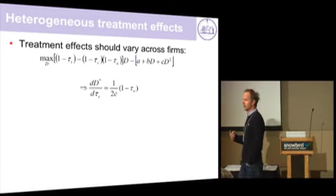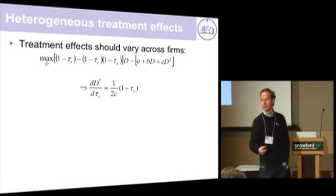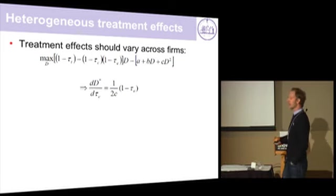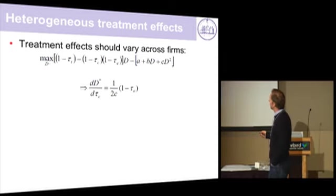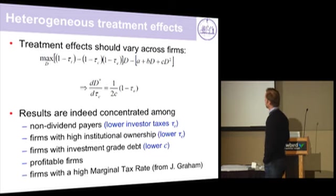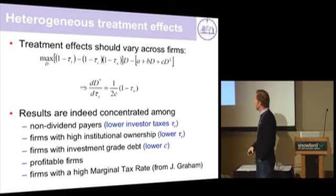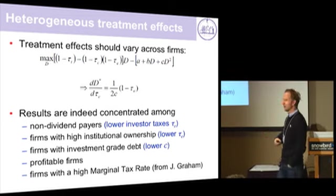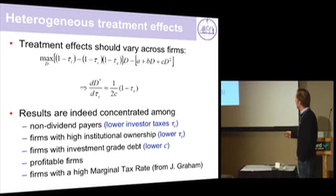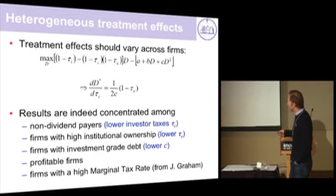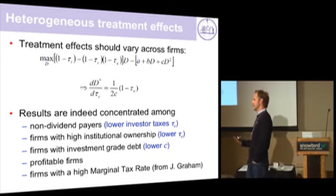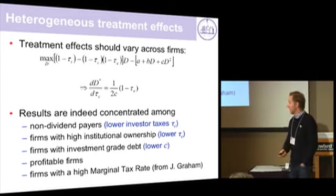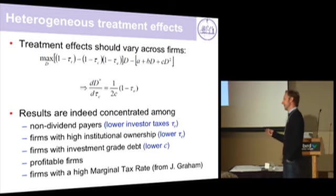We look at heterogeneous treatments because the theory is informative about comparative statics we can test. The optimal amount of debt would be affected by how income from equity is taxed and the curvature of the cost function. Indeed, firms with high institutional ownership or non-dividend payers — who have little taxation of income from equity, since this comes from capital gains you can time — show stronger effects. Similarly, we don't have an effect for firms without investment-grade debt, which makes a lot of sense: these firms find it very costly to issue the debt that would allow them to benefit from the tax shield. Profitable firms react; unprofitable firms don't have income to shield.